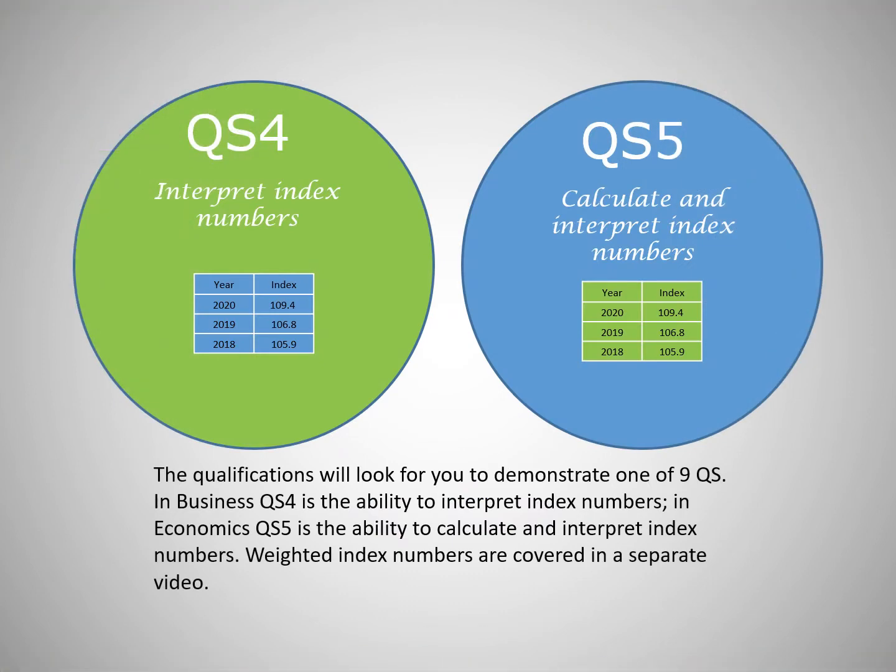Qualifications will look for you to demonstrate one of nine quantitative skills. In business, QS4 is the ability to interpret index numbers. In economics, QS5 is the ability to calculate and interpret index numbers. Index numbers are covered in a separate video.